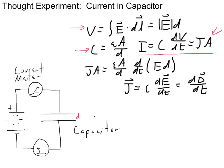These are simple expressions that have all been explained before. Taking the expression i equals C times dV/dt and rewriting it — substituting j times A for i and epsilon A over d for C — we see that the d terms cancel and the A terms cancel. What we end up with is that the current density J equals epsilon times the rate of change of the electric field, or in other words, the current density equals the rate of change of the electric flux vector D with time. We've related current to the change of a field.